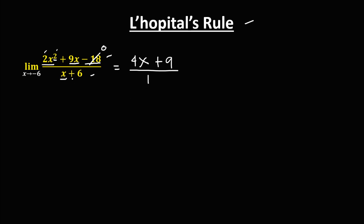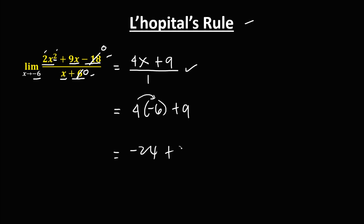We can now use direct substitution with this new equation. Since x approaches negative 6, we have 4 times negative 6 plus 9 — there's no need to put the denominator of 1. Simplifying: 4 times negative 6 is negative 24 plus 9, and negative 24 plus 9 is negative 15. So this is now the limit.